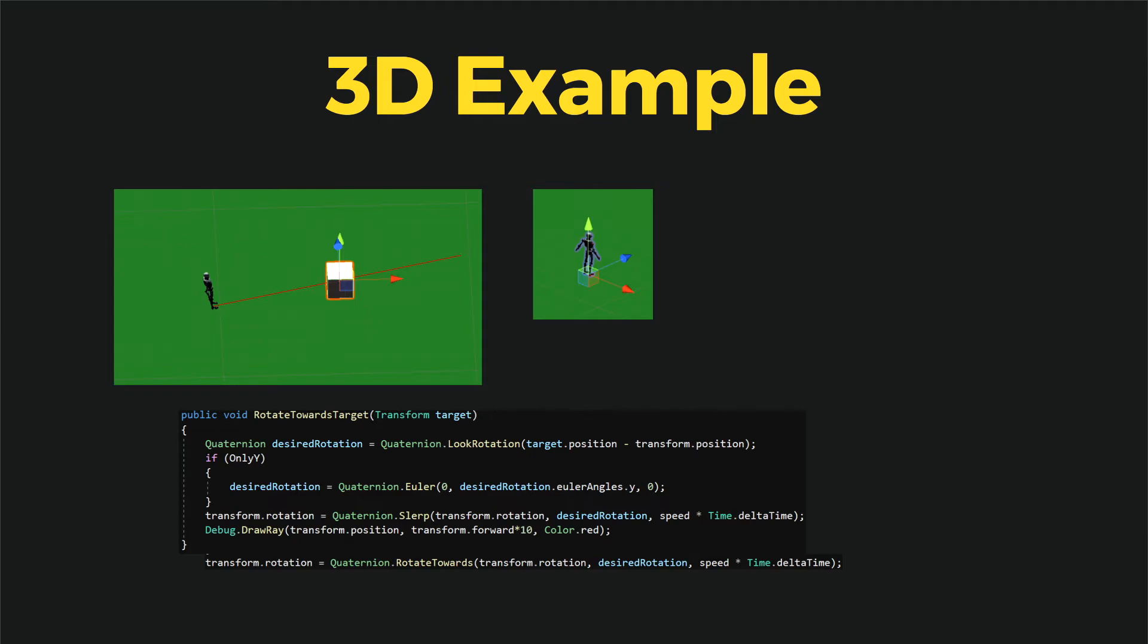RotateTowards preserves the constant speed of rotation. And we apply it to the transform.rotation to rotate it. And we draw a ray from transform.position to transform forward to show at which direction the robot is pointing towards.